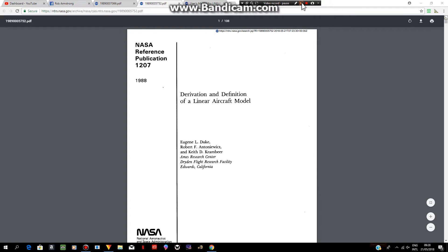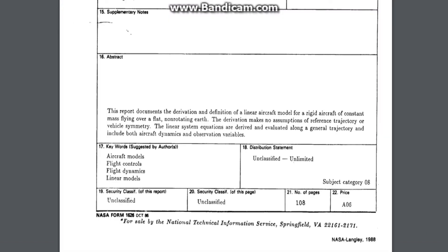Number two: the next document is titled 'Derivation and Definition of a Linear Aircraft Model,' NASA Reference Publication number 1270, dated 1988. All the way down at the bottom of the report it states: 'This report documents the derivation and definition of a linear aircraft model for a rigid aircraft of constant mass flying over a flat non-rotating earth.' Again, why would the world's leading space agency be using any calculations that pertain to a flat and stationary earth with regards to aviation?